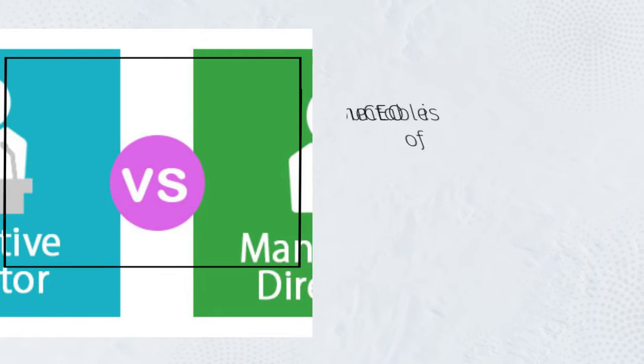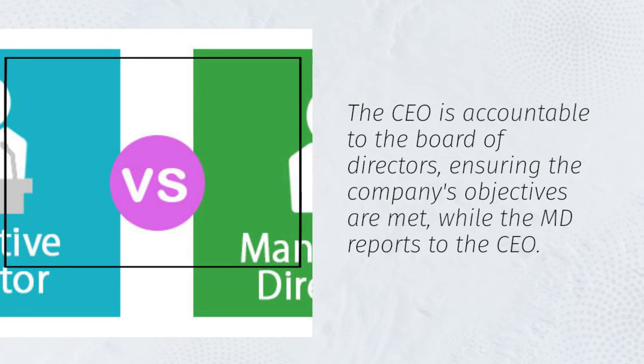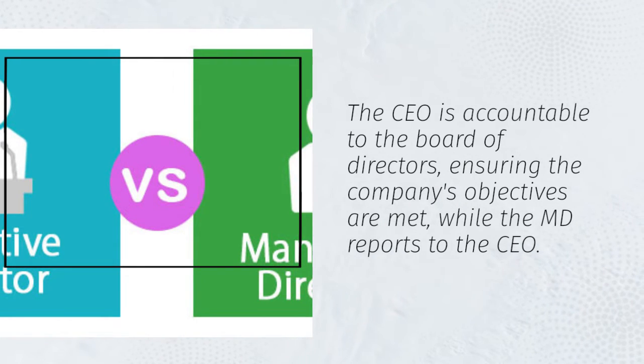The CEO is accountable to the board of directors, ensuring the company's objectives are met, while the MD reports to the CEO.